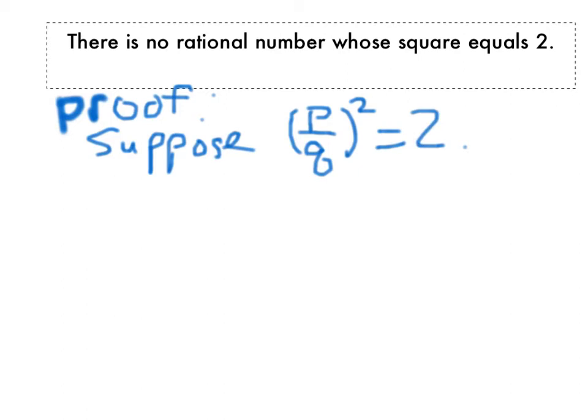Now let's assume that we've already reduced the fraction p over q. So p over q, p and q are whole numbers, they're integers. That's a fraction. And we've already reduced p and q, meaning we've already taken out any common factors.